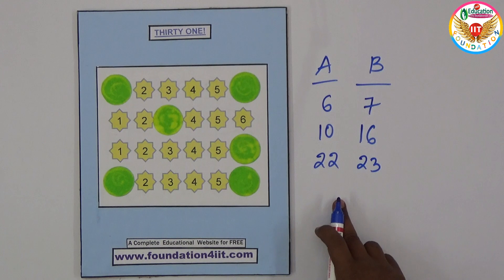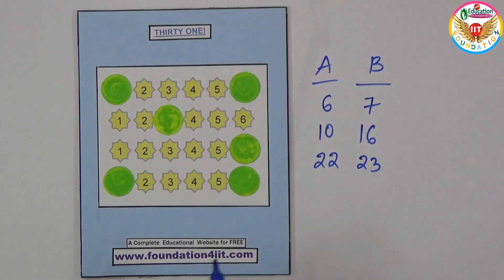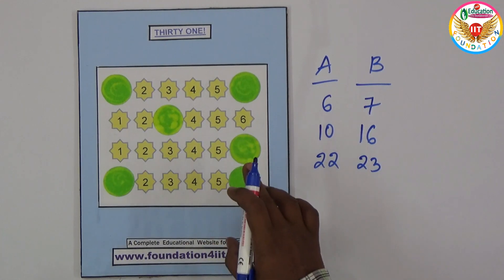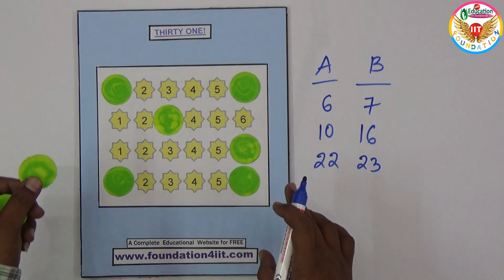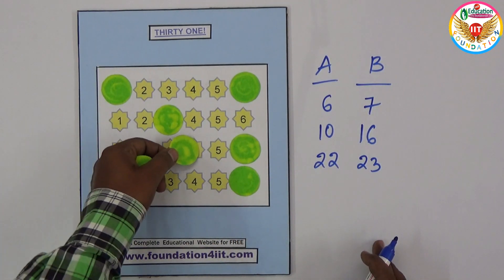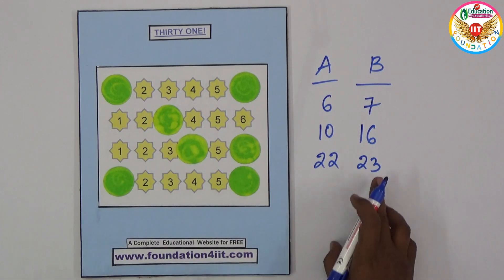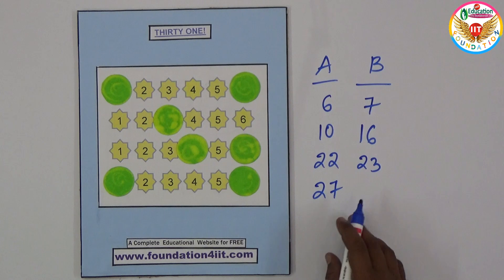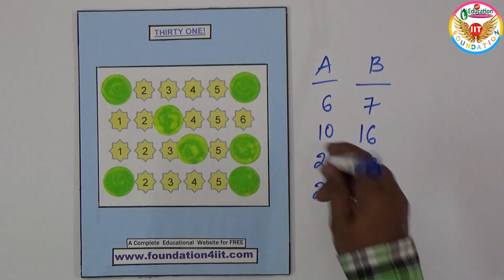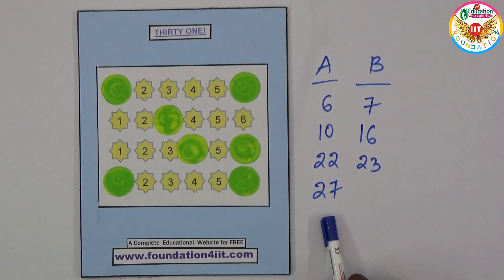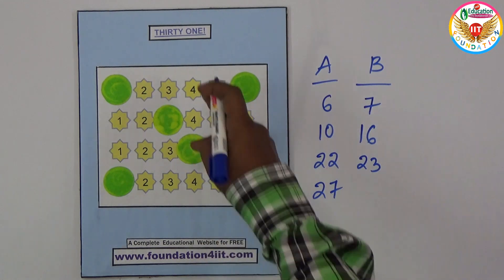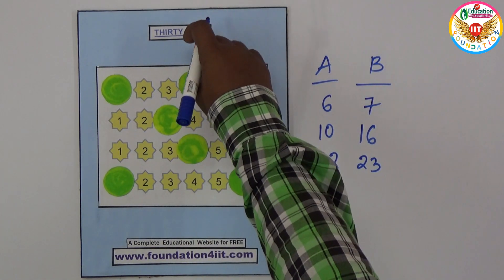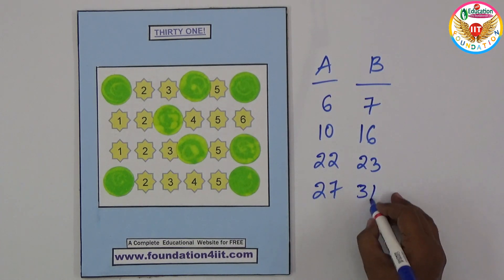Now turns to A. A requires 31. Now 23 is over, more 8 we need, so 8 is no chance. For example, if you kept 4, 23 plus 4 is 27. Now chance to B. Already 27 is over, 27 plus 4 is 31. You can keep any place 4 to reach 31.